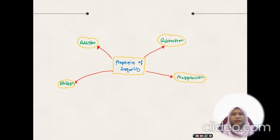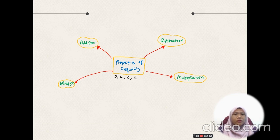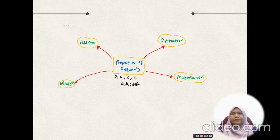Since we are talking about inequality, the symbol for inequality is greater than, less than, greater than or equal, or less than or equal. Now let A, B, and C be elements of the real numbers. For the addition property of inequality, if A is greater than B, then A plus C is greater than B plus C.